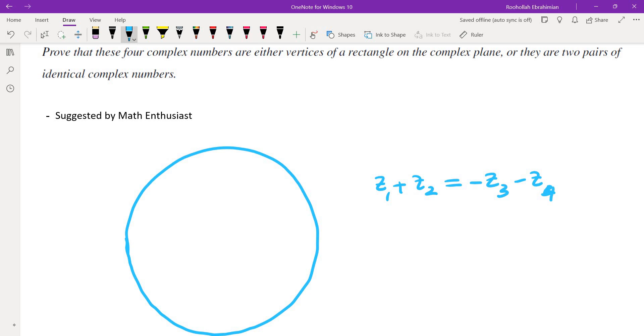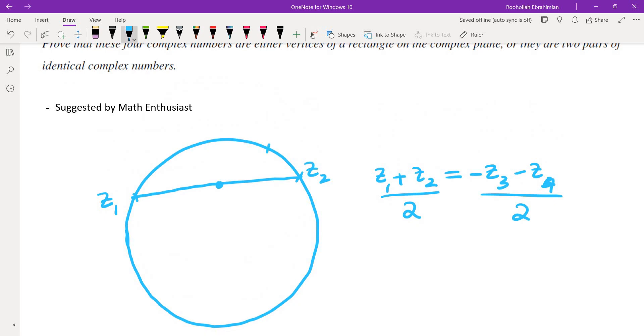If you interpret that in the language of geometry, that means the midpoint of z1, z2 would have to be the same as the midpoint of negative z3, negative z4. In this diagram it doesn't look like the midpoints are the same. How do we justify that the midpoints are not the same?